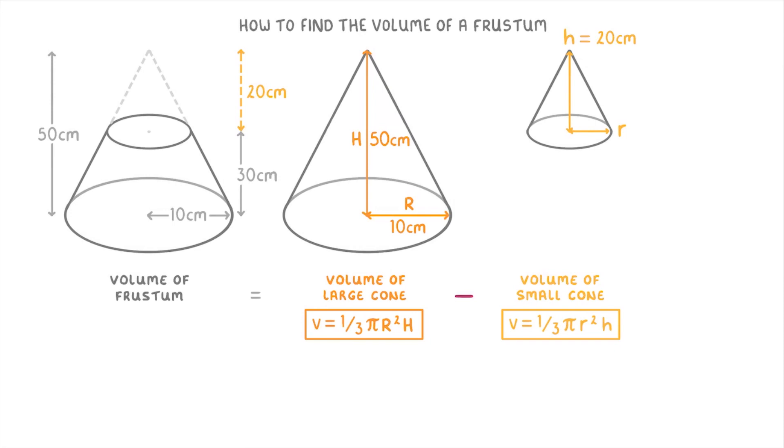Now to look at the radius of the small cone, we have to think of the large and small cones as similar shapes and find out the scale factor between them. Because if we know how many times smaller the small cone is than the larger one, we'll also know how many times smaller the radius is. To find the scale factor we can do the large cone's height of 50 centimeters divided by the small cone's height of 20 centimeters, which gives us 2.5.